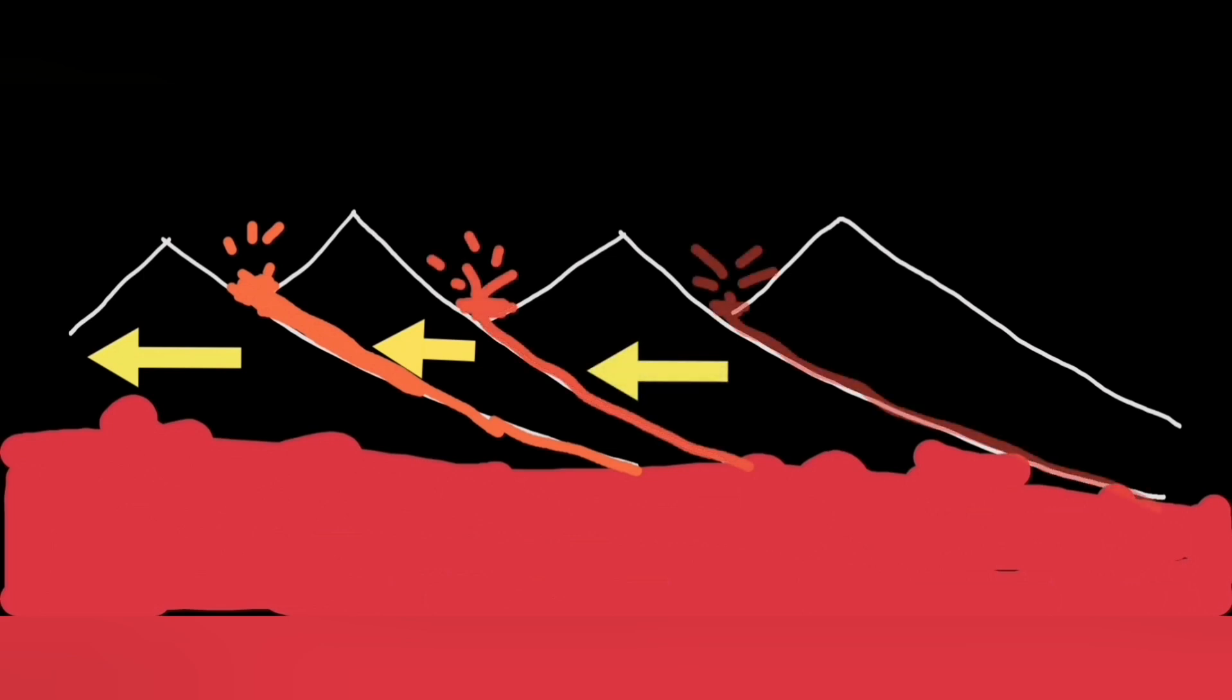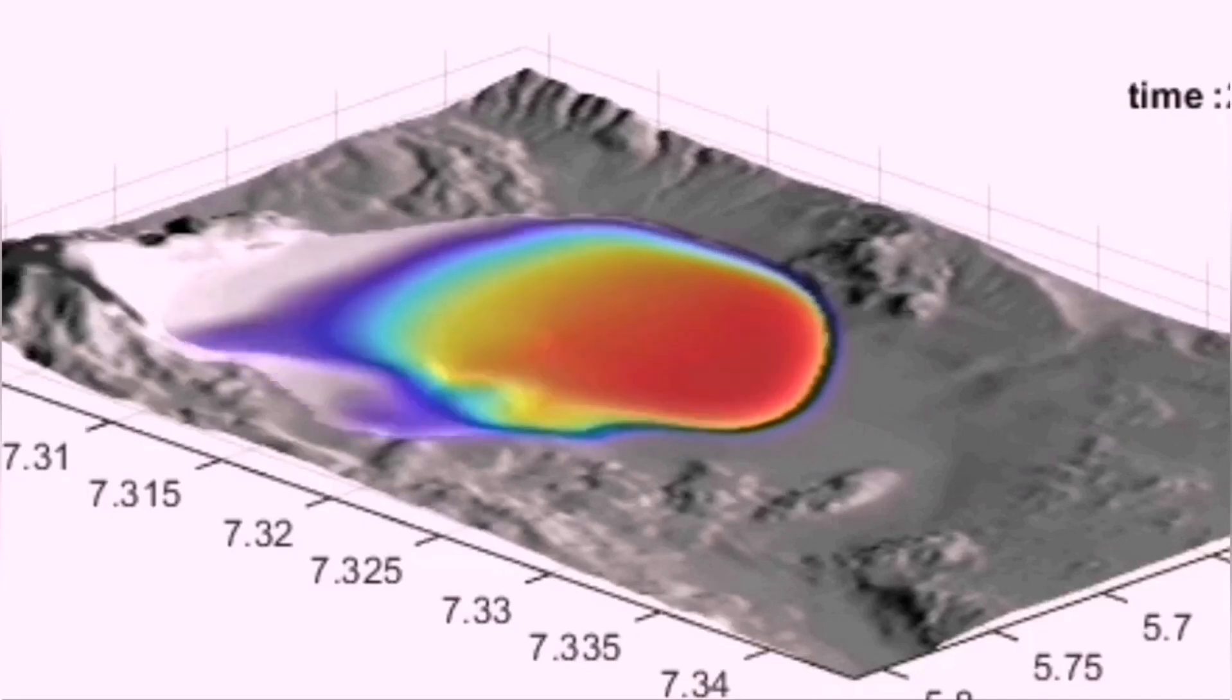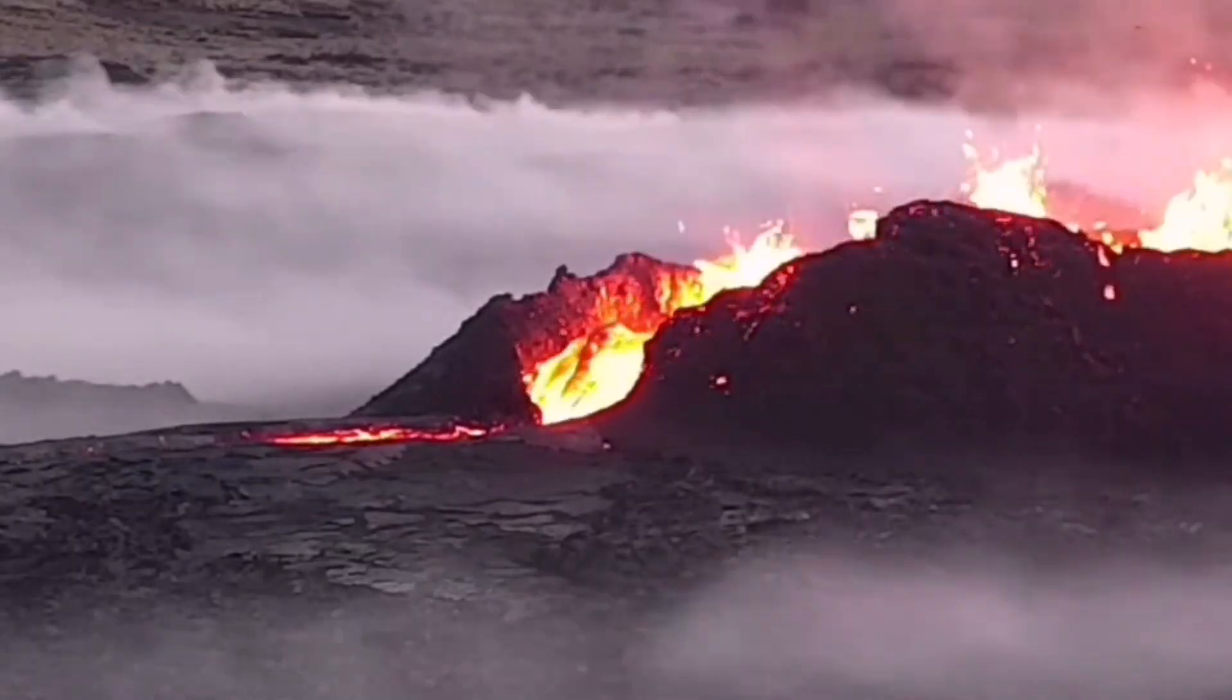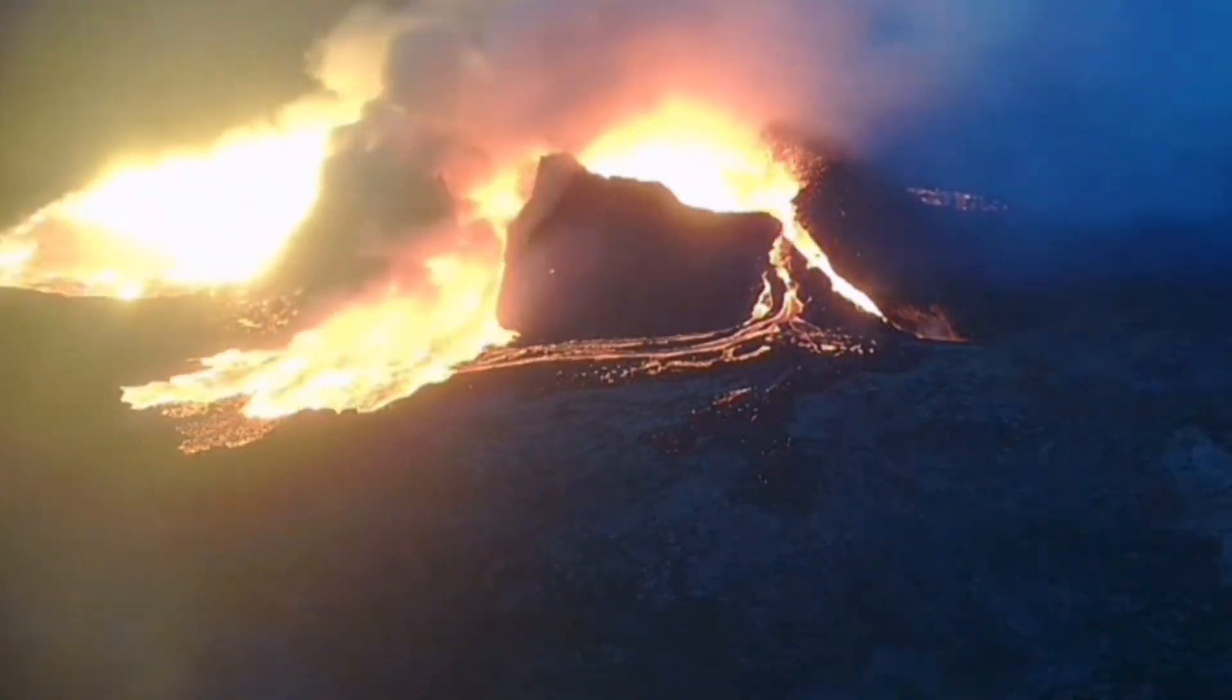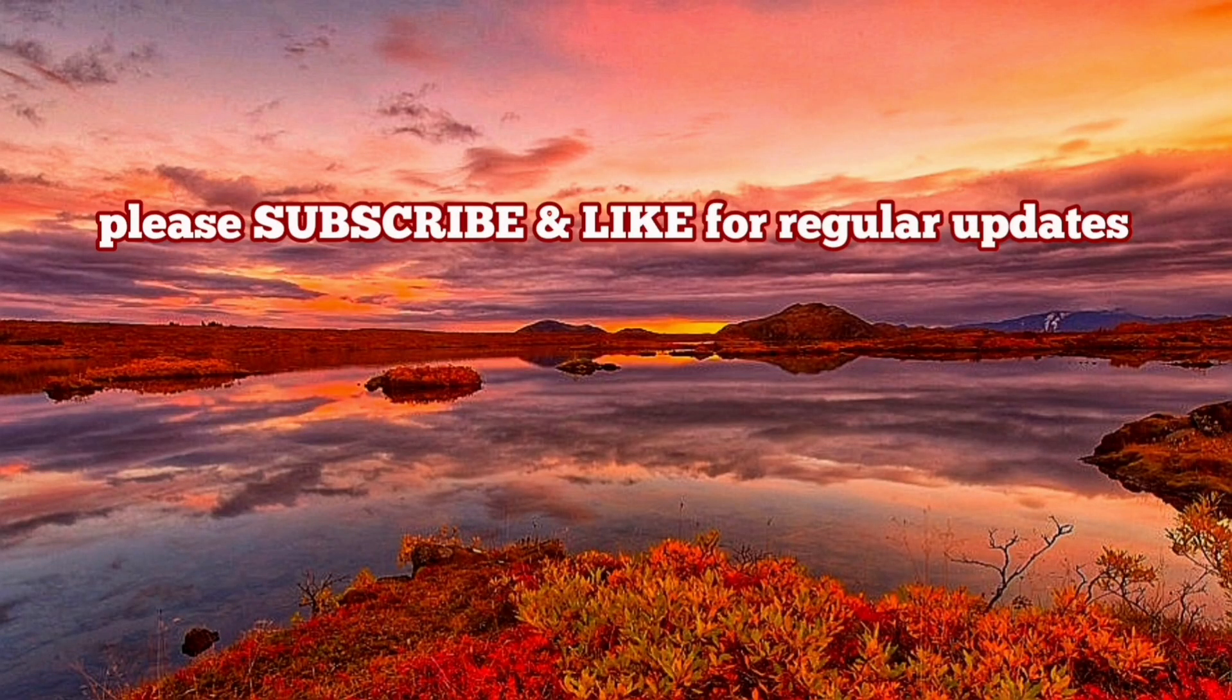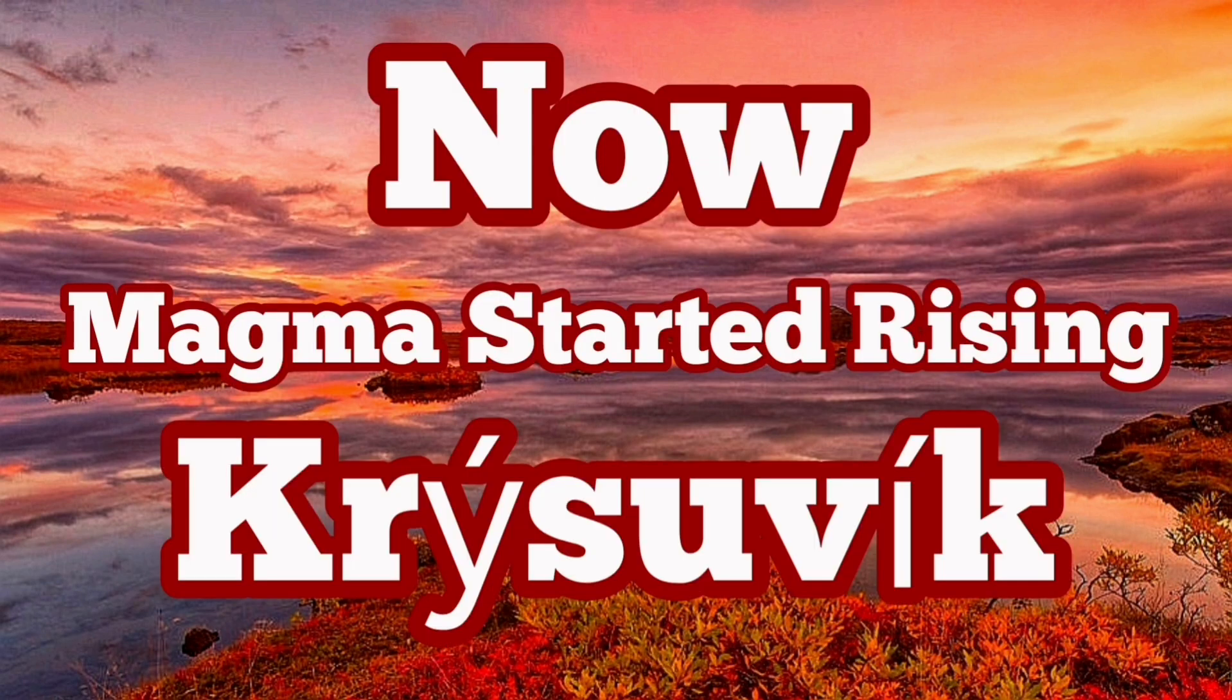This is a scary situation because the Svartsengí-Blue Lagoon-Grindavík volcanic system is now active. And the magma movement in that direction can actually increase the chances of risk to the buildings and structures in the vicinity of those areas, including Reykjavik, the capital of Iceland.